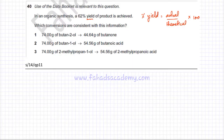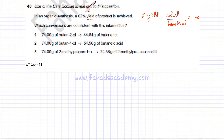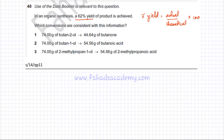Coming back to the question, there are three options given, and what is being asked is which conversions are consistent with the 62% yield information — that is, in which of the three options is the yield 62 percent.